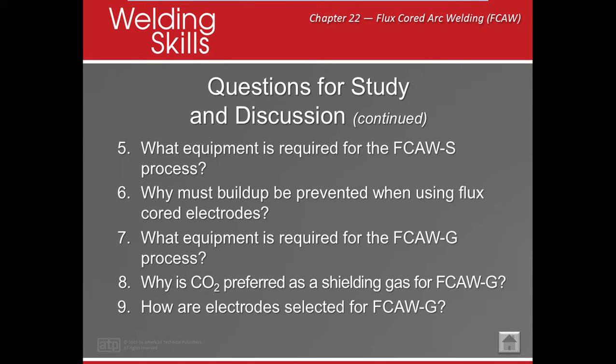What equipment is required for FCAW-S? With FCAW-S, the gas is interior and is made by the flux inside the electrode. We need the welding machine, welding gun, cable gun assembly, wire feeder, neutral drive rolls, flux core electrode wire, ground, and workpiece connection.